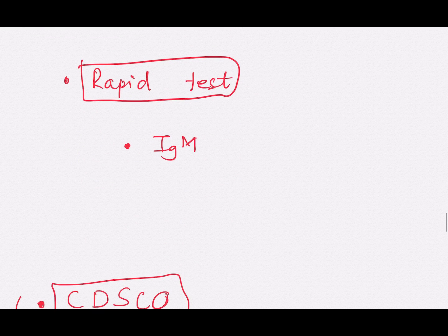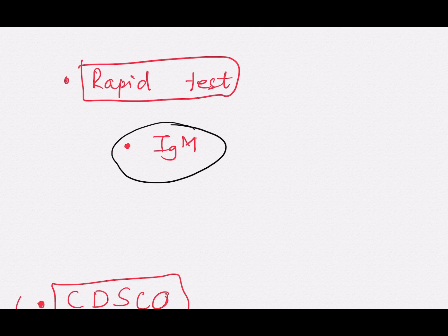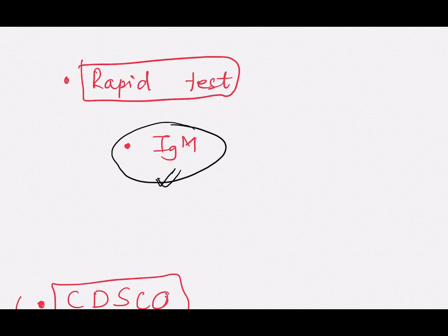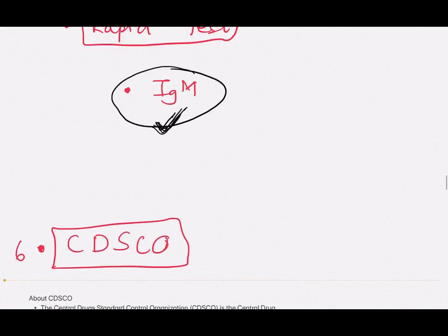The next important test is the rapid test. In the rapid test, what we diagnose is IgM immunoglobulins. These immunoglobulins are specific to specific viruses. Since the first immunoglobulin generated after infection is IgM, if we can test for IgM in the early stage and find IgM specific to COVID-19, then we know the patient has COVID-19. So in the rapid test, we diagnose and match IgM. You should know about these two diagnostic tests — RT-PCR and rapid test.